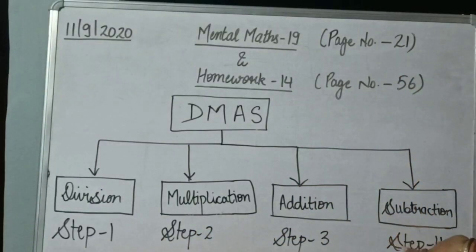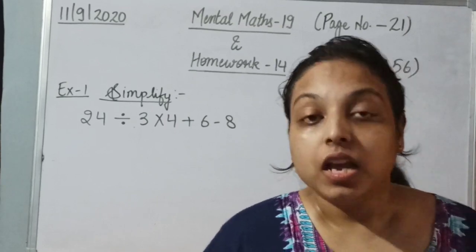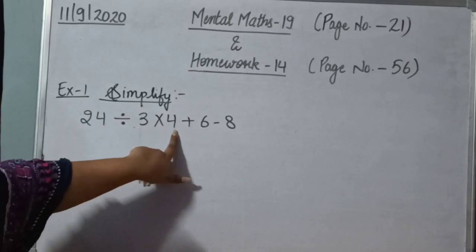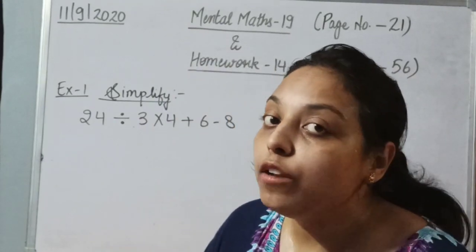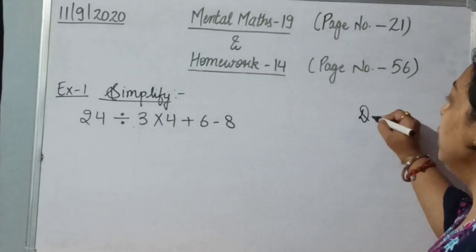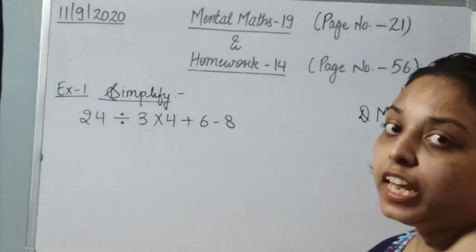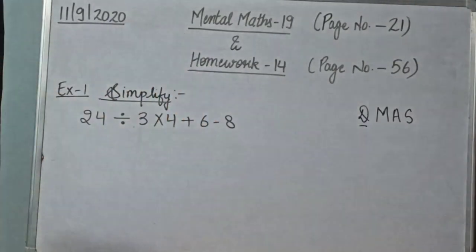Now we are going to apply the method DMAS in the examples. So the first example is simplify: 24 divided by 3 multiplied by 4 plus 6 minus 8. In this example, we can see that all four operations are present together. So first solving it, we will apply the rule DMAS. According to DMAS, the first step to solve is divide.